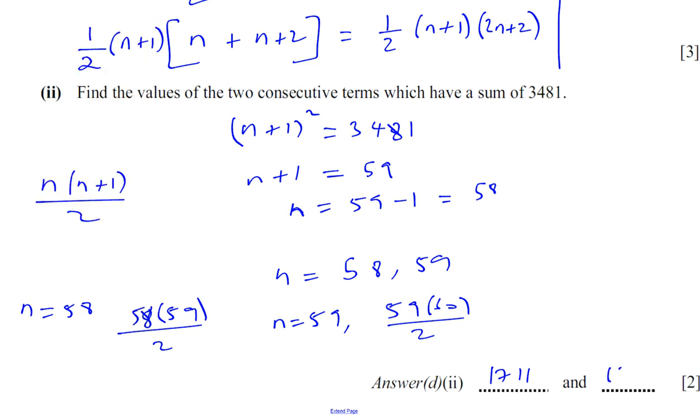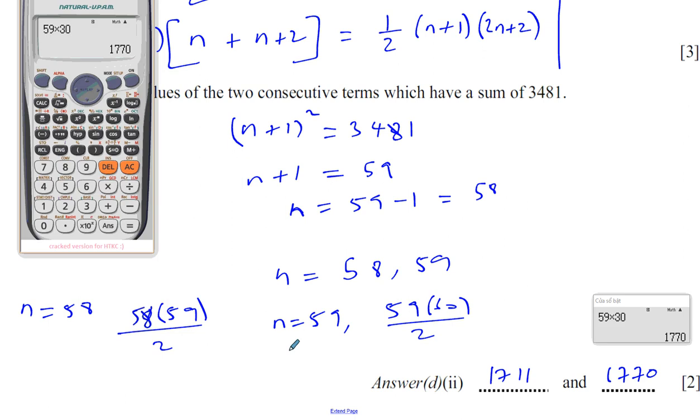And you can check to see, does that give us the right product? Does it fit the question? If you add them together, the sum has to be 3,481. 1711 plus 1770. The sum has to be 3,481, which it is. So, we found the two values using the answer from before.